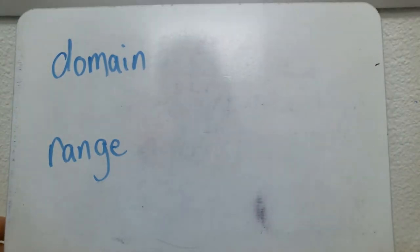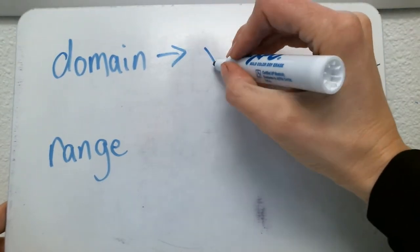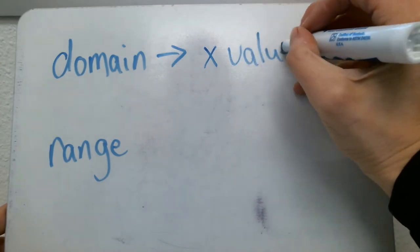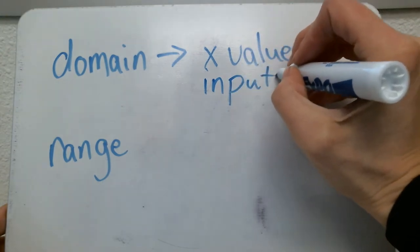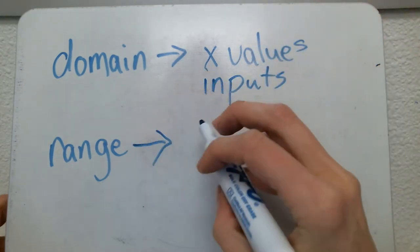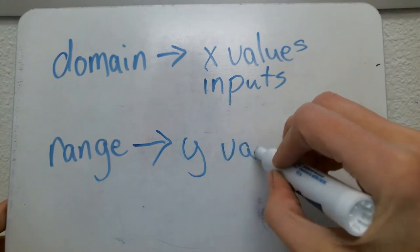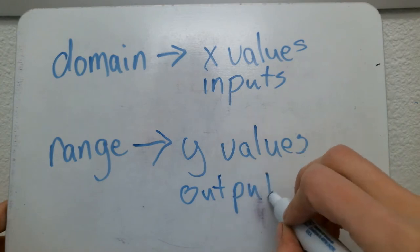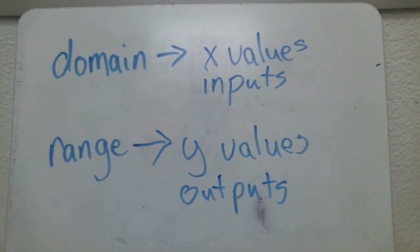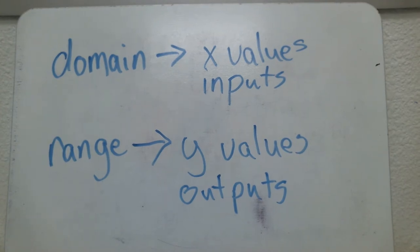The domain refers to the x values — we also call this the inputs. And the range refers to the y values, or the outputs. I'm going to draw you a graph and we're going to talk about the domain and range of it.